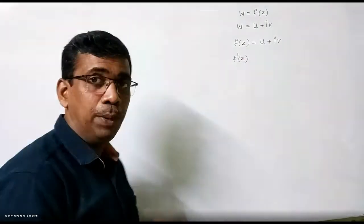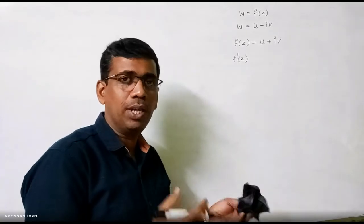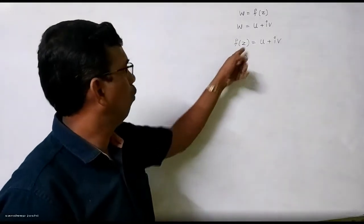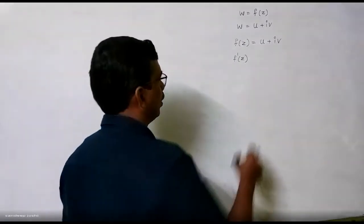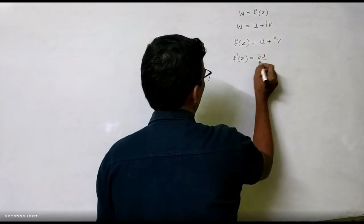I am just repeating for those students if I have thought that they will join first. Then a little bit of refreshment. Refresher will be. F of Z is the derivative of F of Z. So this is U. We will have the derivative of U by delX.